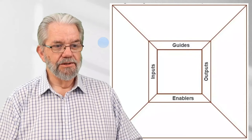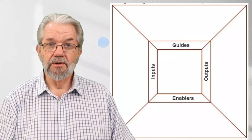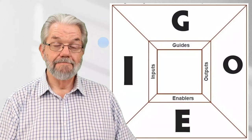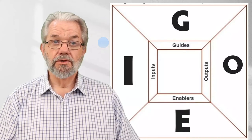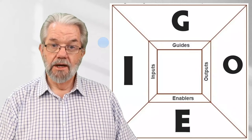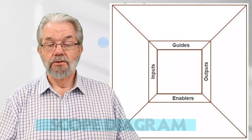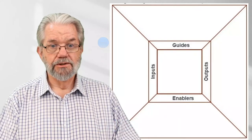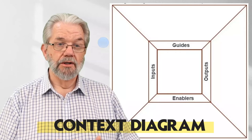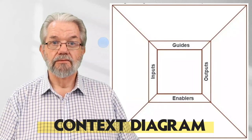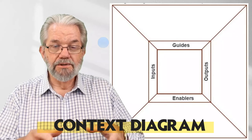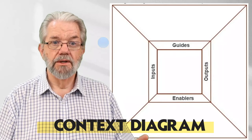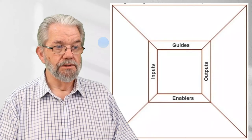You might have heard of this as an IGOE diagram — we have Roger Burlton to thank for that. In the BP Trends Associates world, in Paul Harmon's methodology and training courses, it's called a scope diagram, because it shows us the scope of the process. I call it a context diagram because I think it shows us the context of the process — both what happens in the process itself, and also the context in which it lives.